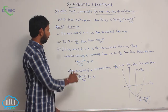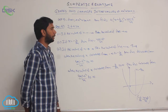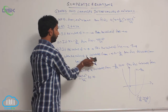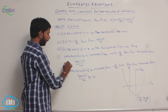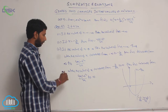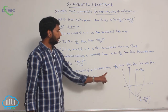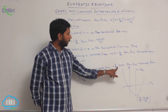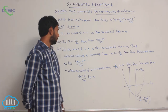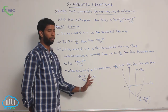Thus, when the value of x increases from minus infinity to minus b over 2a, then f of x decreases from infinity to 4ac minus b squared over 4a. When the value of x increases from minus b over 2a to infinity, then f of x increases from 4ac minus b squared over 4a to infinity.